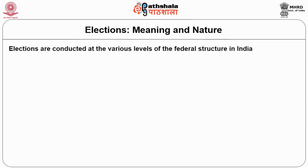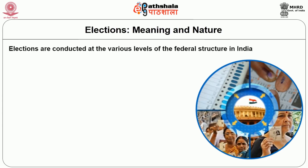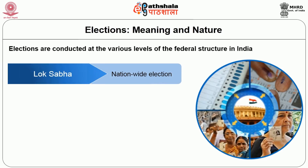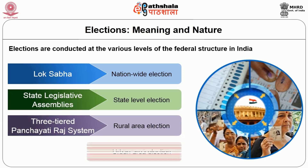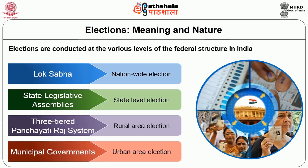Elections are conducted at various levels of the federal structure in India. There is a nationwide election that returns representatives of the people to the Lok Sabha, and at the state level there are elections for the state legislative assemblies. At the grassroots level, there are elections for local bodies like the three-tiered Panchayati Raj system in rural areas and municipal governments in urban areas.